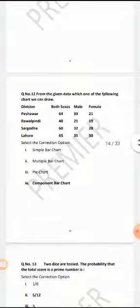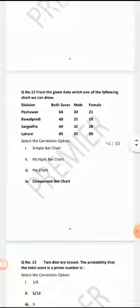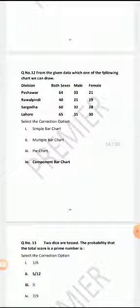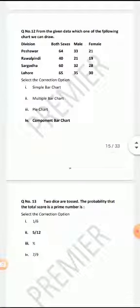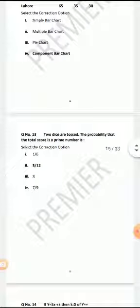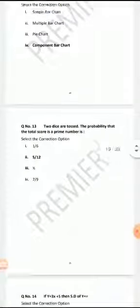From the given data, which one of the following chart can we draw? The divisions: Peshawar, Rawalpindi, Sargodha, Lahore. The observations: male and female. There we draw the component bar chart. The correct answer is component bar chart.